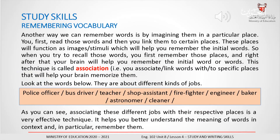Another way we can remember words is by imagining them in a particular place. You first read those words and then you link them to certain places. These places will function as images, stimuli, which will help you remember the initial words. So when you try to recall those words, you first remember those places, and right after that your brain will help you remember the initial words. This technique is called association — you associate and link words to specific places that will help your brain memorise them.